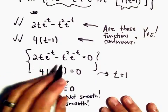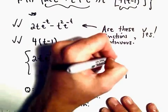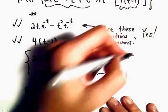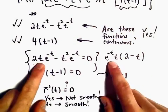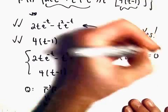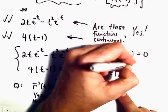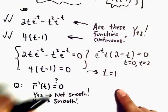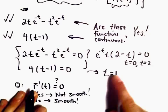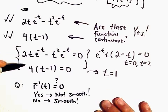We could factor out the e to the negative t. We could pull out a t. And then we would have 2 minus t left over in our parentheses. The solutions for the first equation, we would get t equals 0 or t equals 2. The solution for the second equation is t equals 1. There's no value of t that makes both equations equal to 0 simultaneously.